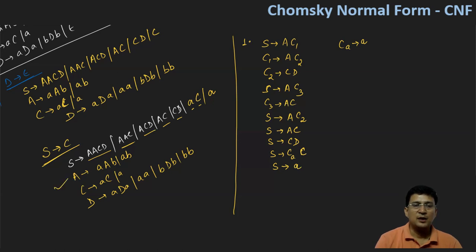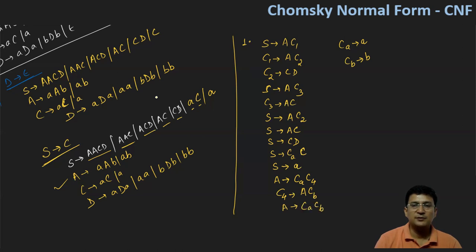This is already in Chomsky's normal form, so we don't need to resolve it. Looking at productions starting with A: A produces small a, capital A, B. Let's say small a means Ca. C already has that production. And let's say after this we take C4. Let's say C4 produces capital A followed by CB. Then A produces aB, which we can write as Ca followed by CB.